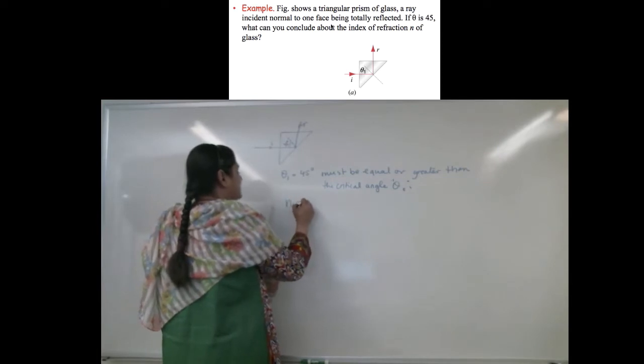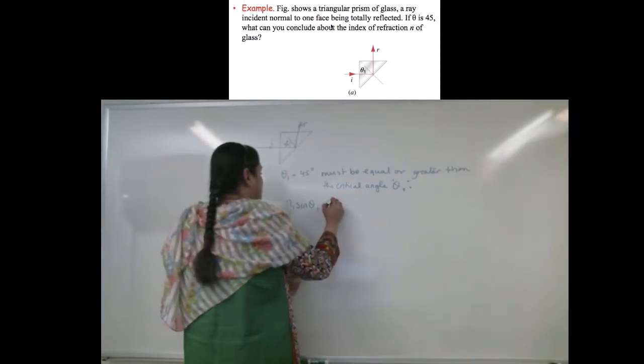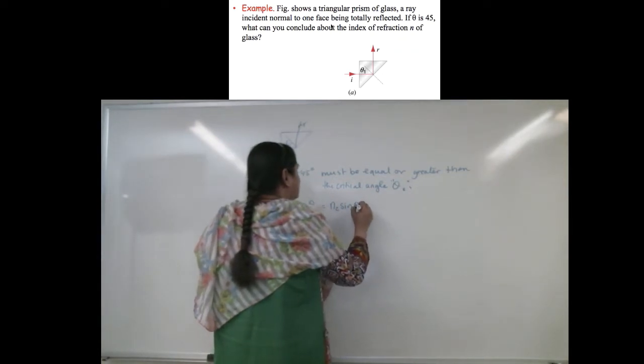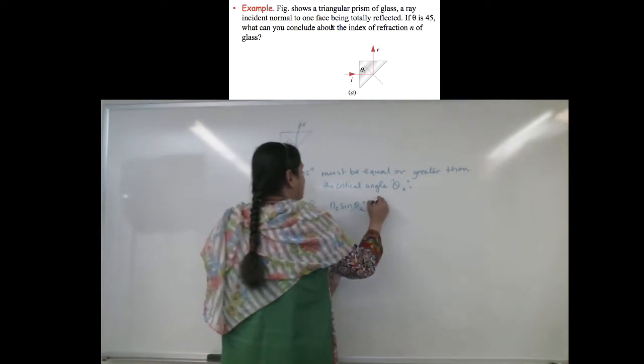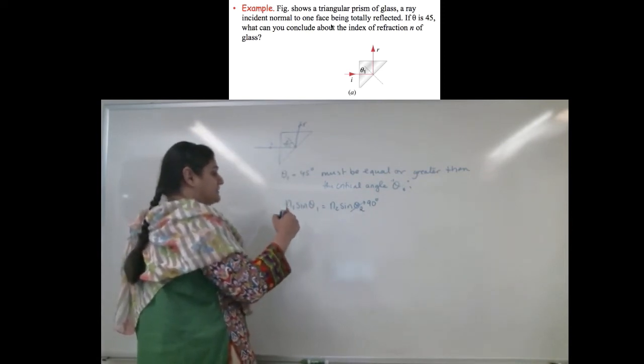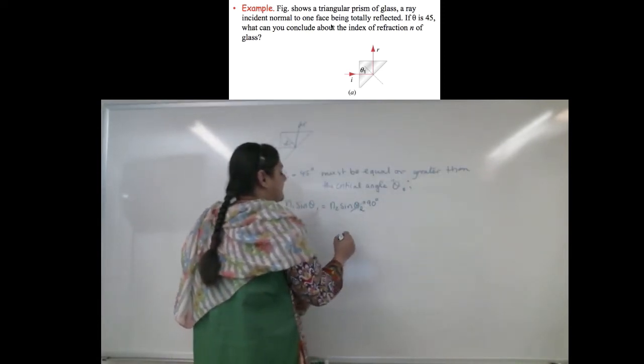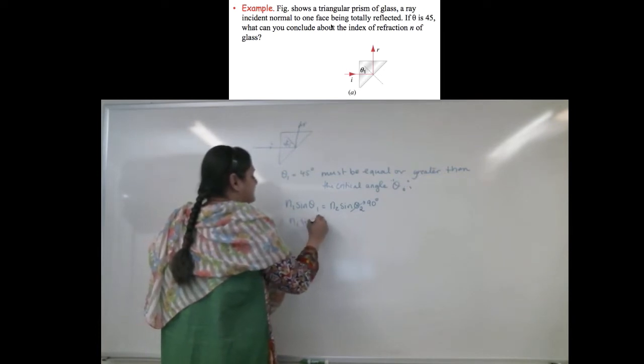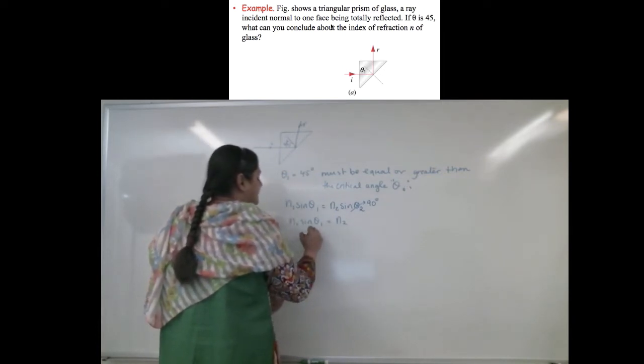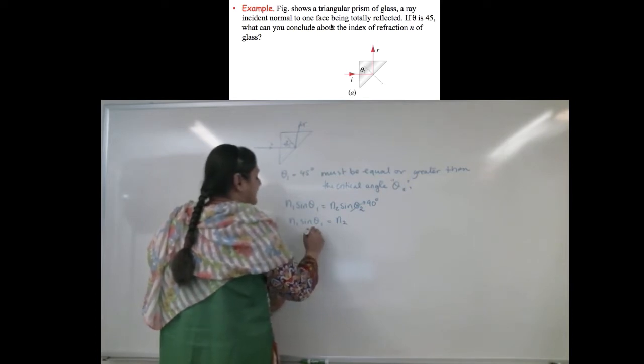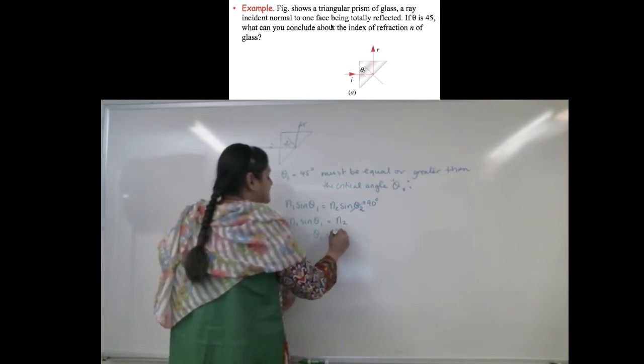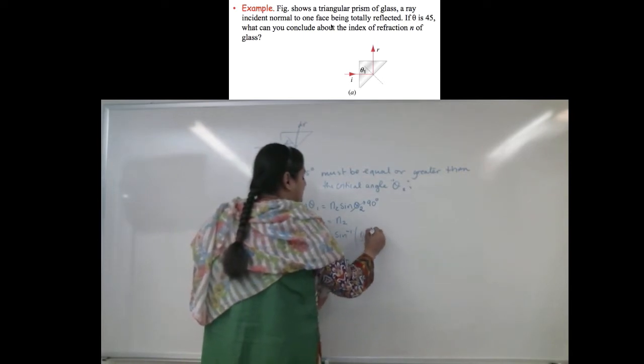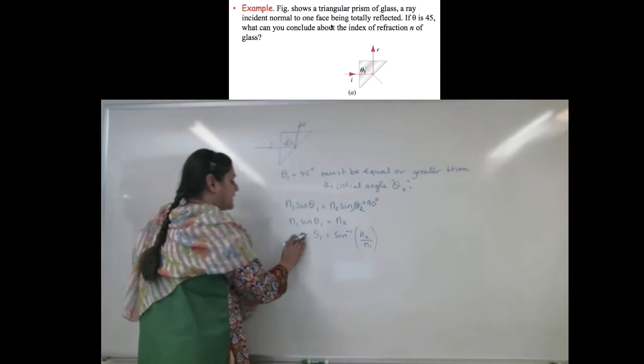So, what do I know? N1 sine of theta 1 equals N2 sine of theta 2, which in this case is going to be 90 degrees, because it is being totally internally reflected. That means sine of 90 equals 1. What do I get? N1 sine of theta 1 equals N2. This implies theta 1 equals sine inverse of N2 over N1. It's just a matter of rearranging this above equation.